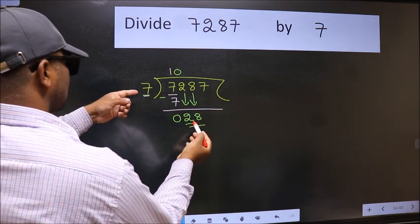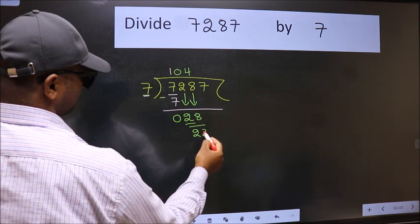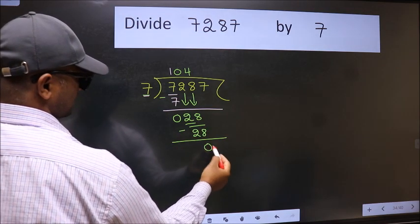When do we get 28 in 7 table? 7 fours 28. Now we subtract. We get 0.